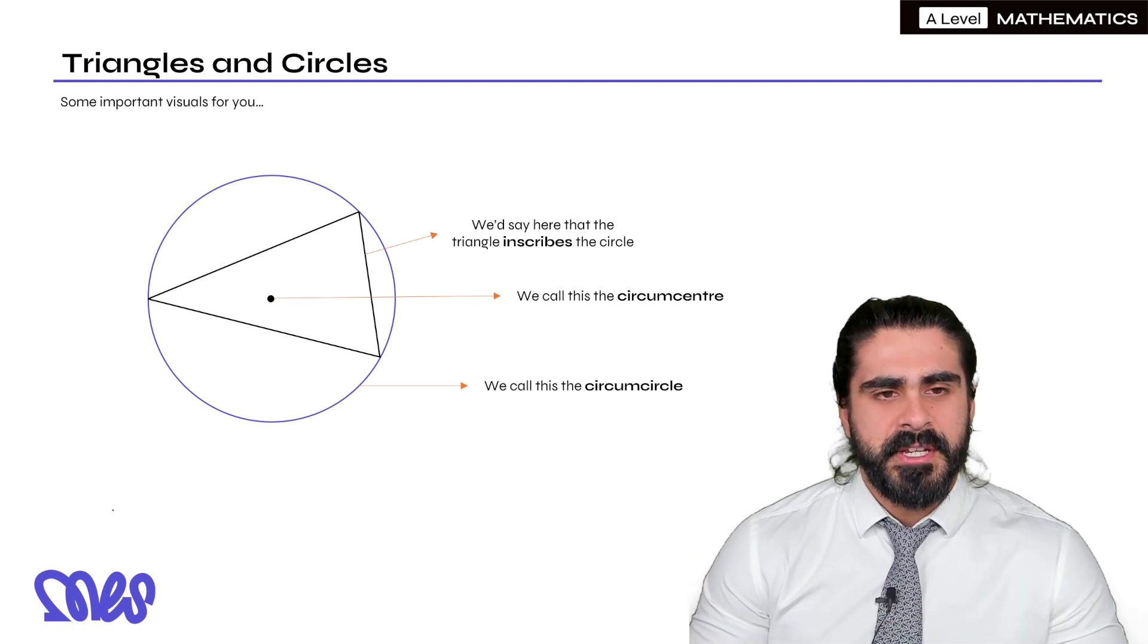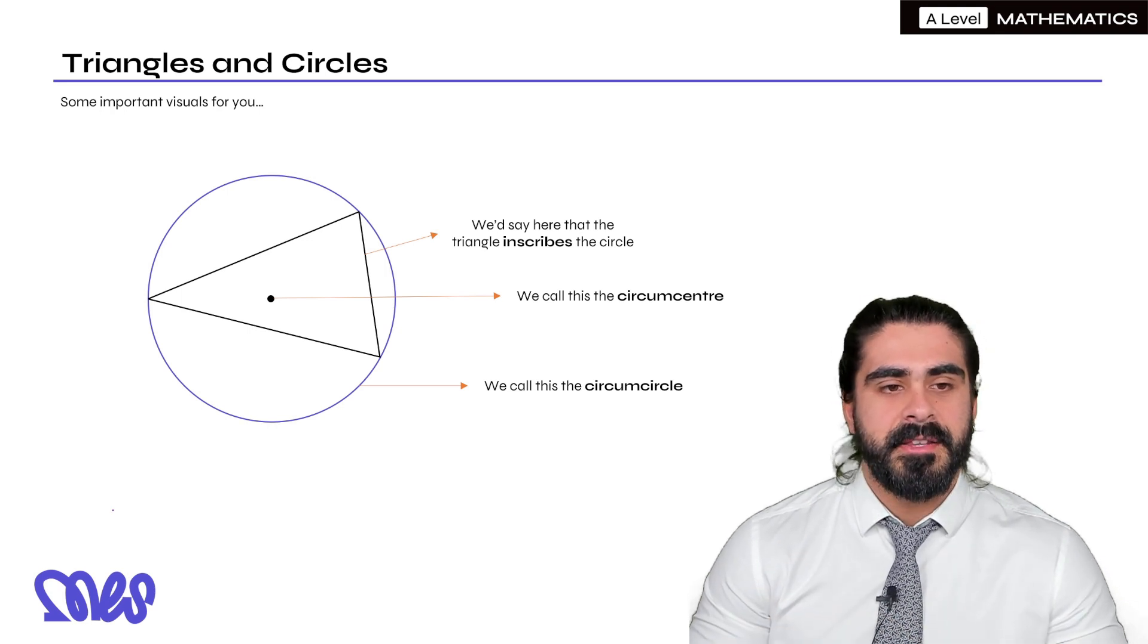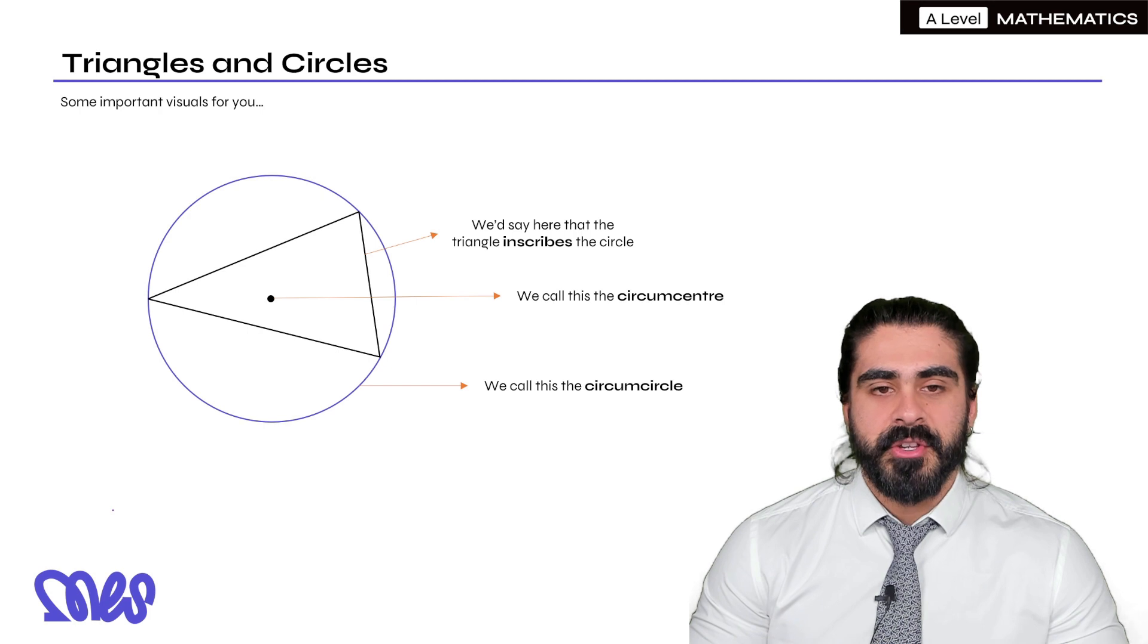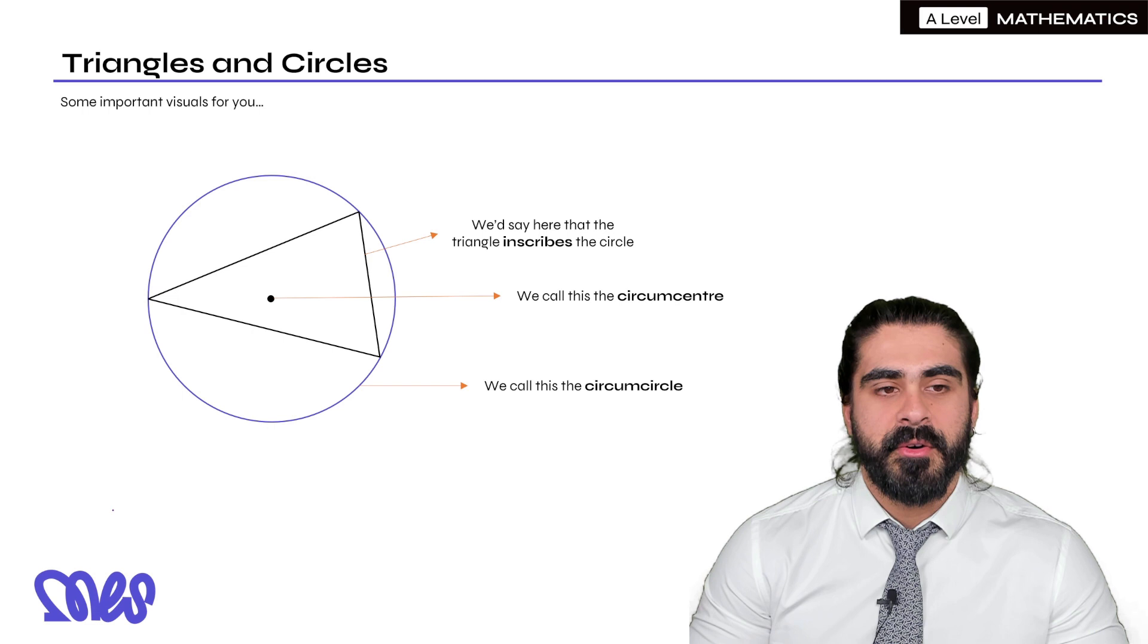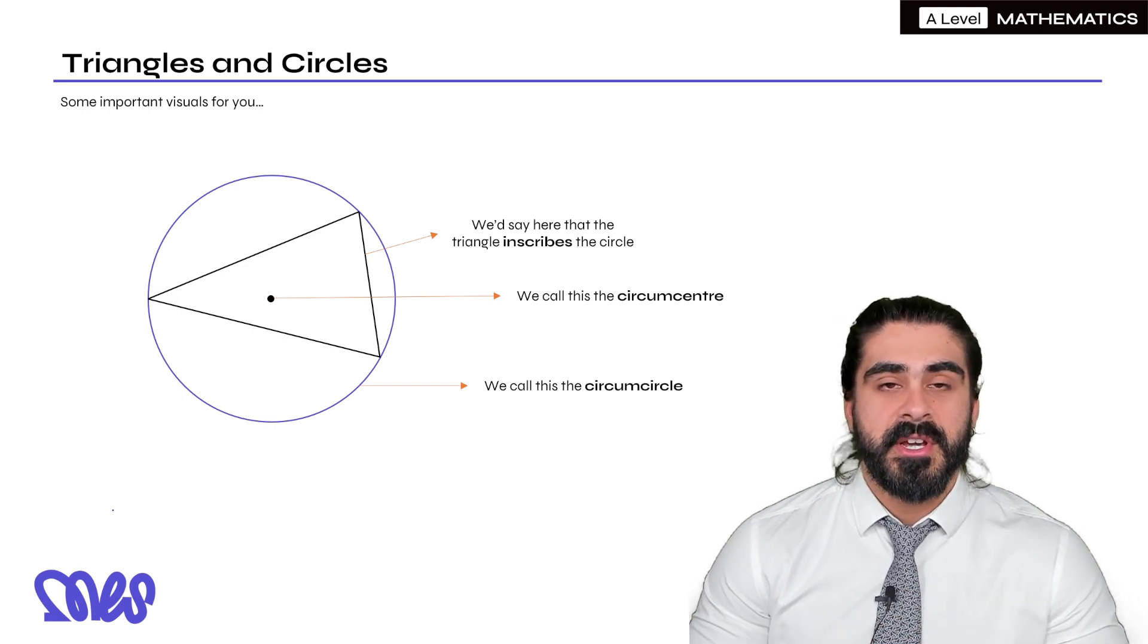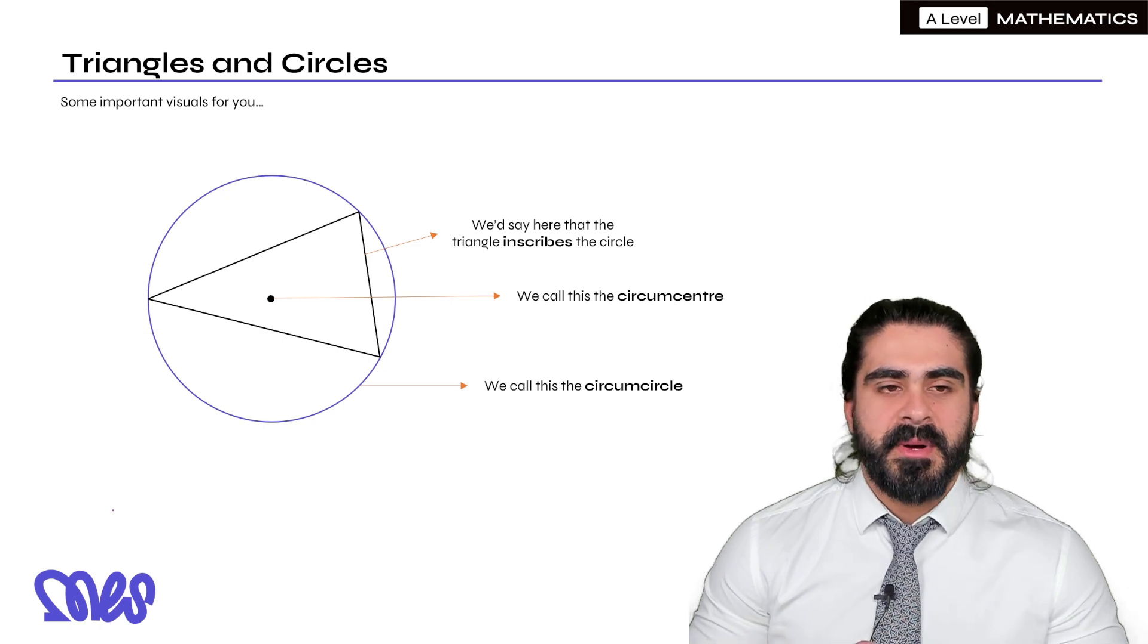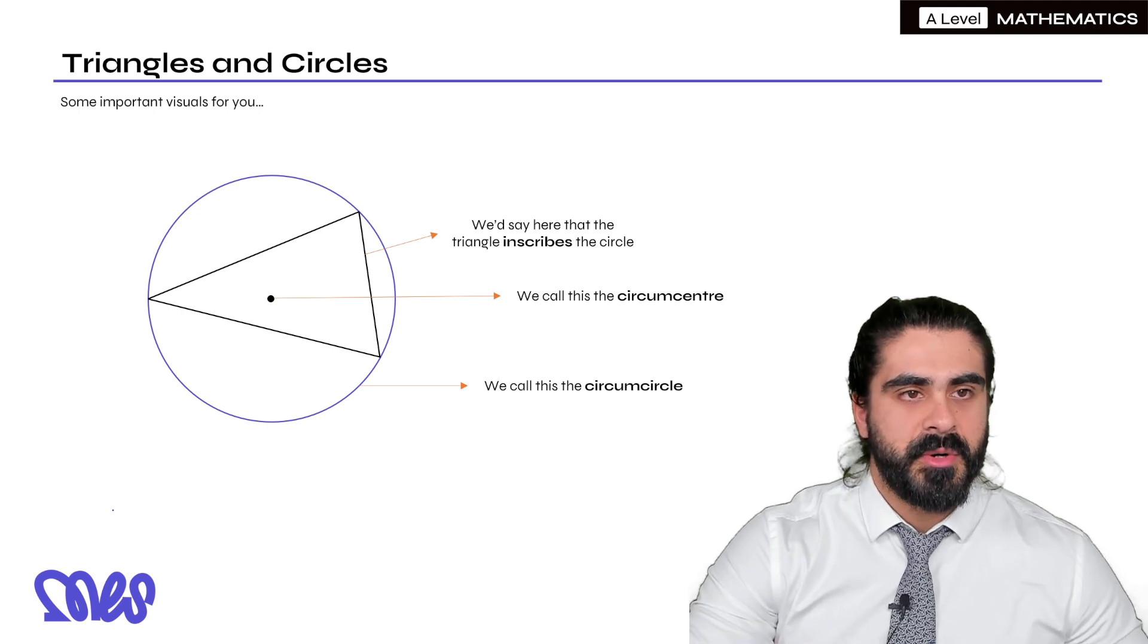There's some visuals for you that you need to be aware of. You can see a circle with a triangle inside, and there I put the center of the circle as well. When it comes to the triangle, we say that the triangle inscribes the circle. The center of the circle we call the circumcenter, and the circle we call the circumcircle. They don't use them too much, but it's lingo you should be aware of.